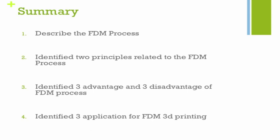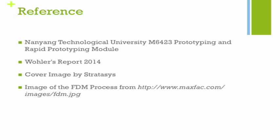To summarize: in this episode I described the FDM process and showed a schematic of it, identified two principles related to FDM, explained three advantages and disadvantages of the process, and identified three applications for FDM 3D printing. For references, I'd like to credit the module on prototyping and rapid prototyping, the Wallace report, cover images from Stratasys, and the FDM process schematic from Maxfac. References are cited as footnotes on the relevant slides.